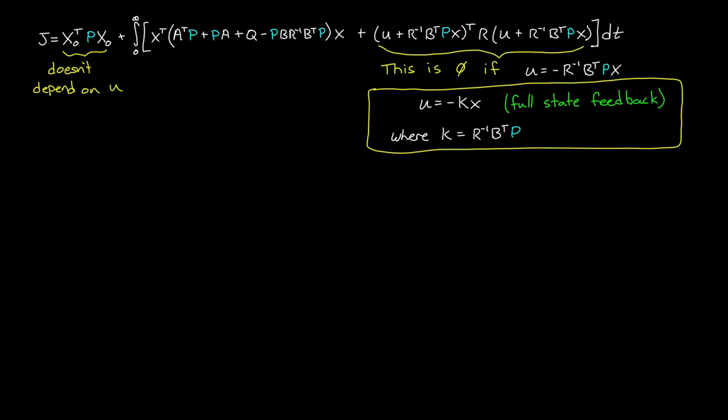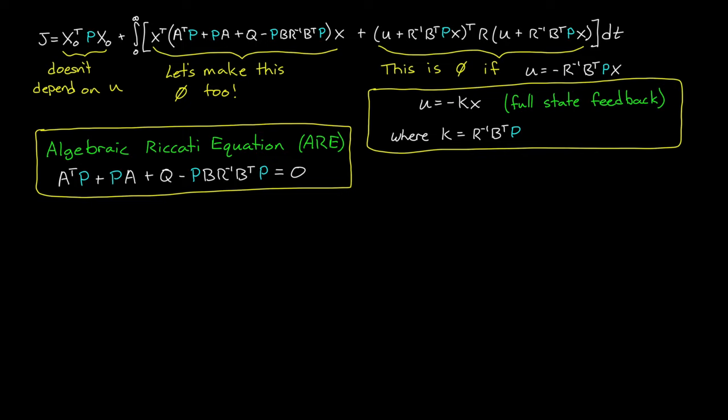So what is this matrix P? Well, to figure that out, we can look at this first term. If the middle section here equals zero, then x transpose times it times x will also be zero. So to make that happen, we're left with this equation. And this is the famous algebraic Riccati equation. We have to find P such that this equation equals zero. And if we can solve this Riccati equation, then we have everything we need to find the optimal gains.